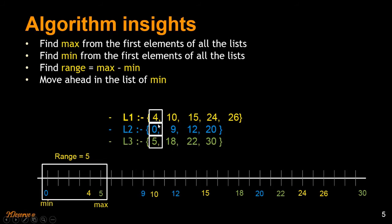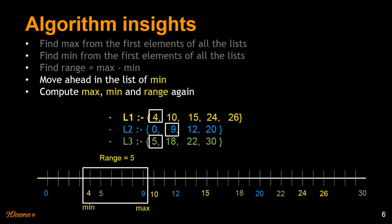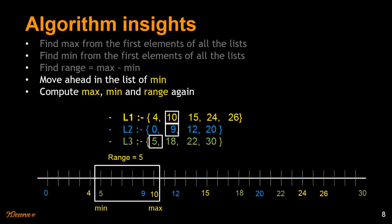All pointers start at position 0. We find max = 5, min = 0, so the range is 5. We move the pointer in L2 (the minimum list). Now min = 4, max = 9, range = 5. We then move L1's pointer (minimum = 4) to 10. Min becomes 5, max = 10, range = 5. We do not update the final min/max unless we find a shorter range.